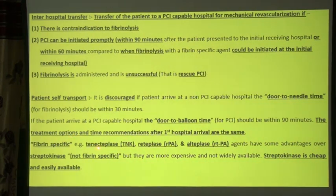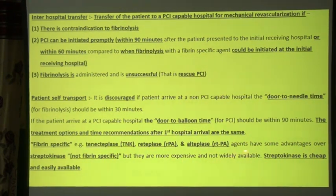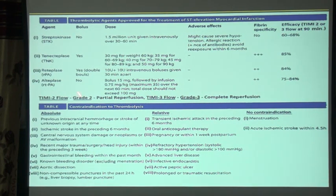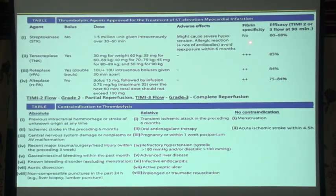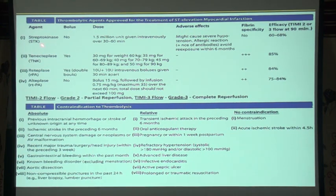Thrombolytic agents approved for the treatment of STEMI: in India, mostly streptokinase — which is not fibrin specific — is used. In metropolitan cities, tenecteplase, reteplase, and alteplase — which are fibrin specific — are used. When you use streptokinase, TIMI grade 2 or grade 3 flow will occur at 90 minutes in 60 to 68% of the artery. If you use fibrin-specific agents — tenecteplase, reteplase, or alteplase — TIMI 2 or 3 flow will be 85% with tenecteplase, 84% with reteplase, and 75 to 84% with alteplase after 90 minutes.